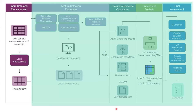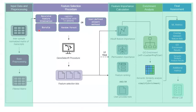I'd like to start with a brief description of the tool — what it does and what sections it has. First, it all starts with input data and preprocessing. You have your intra-sample normalized matrix of transcripts, and the package performs some basic preprocessing, after which you get your filtered matrix ready to be submitted to the pipeline. There are several different machine learning methods implemented, but if you're not happy with any of them, you can substitute or add any other method you think would fit your problem.